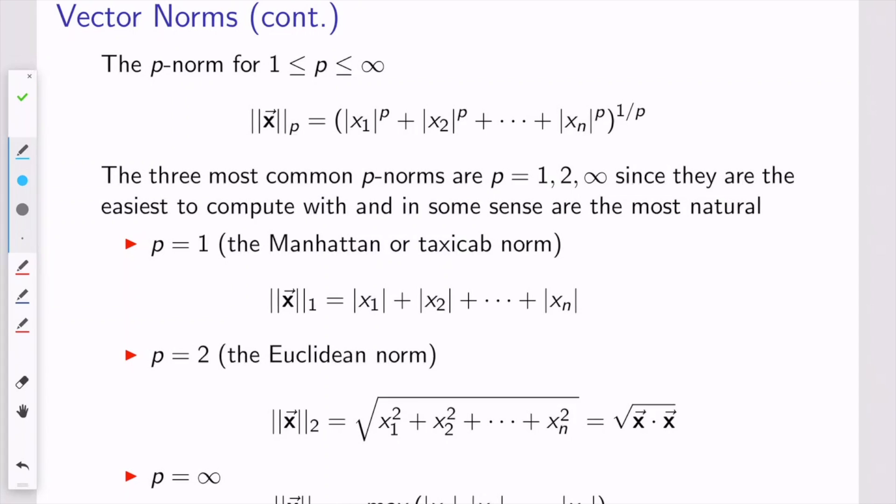For the p-norms, the most common ones are 2, like we just spoke about, and also 1 and infinity. One reason is that they're the easiest ones to compute, and they have pretty easy interpretations.